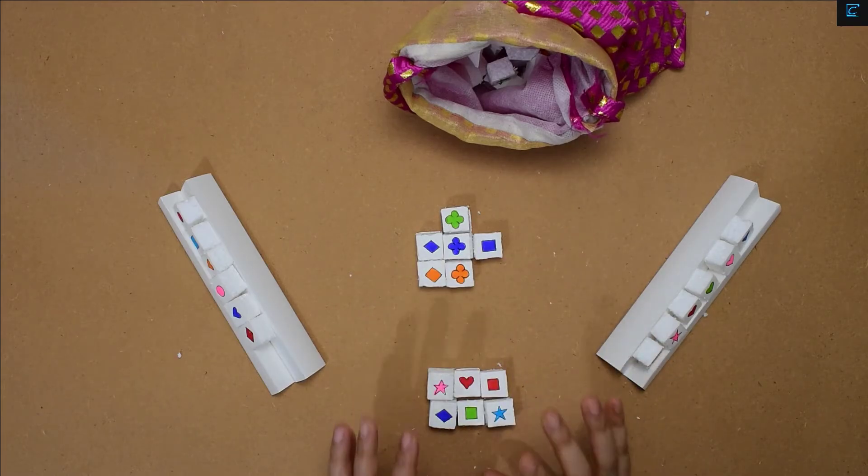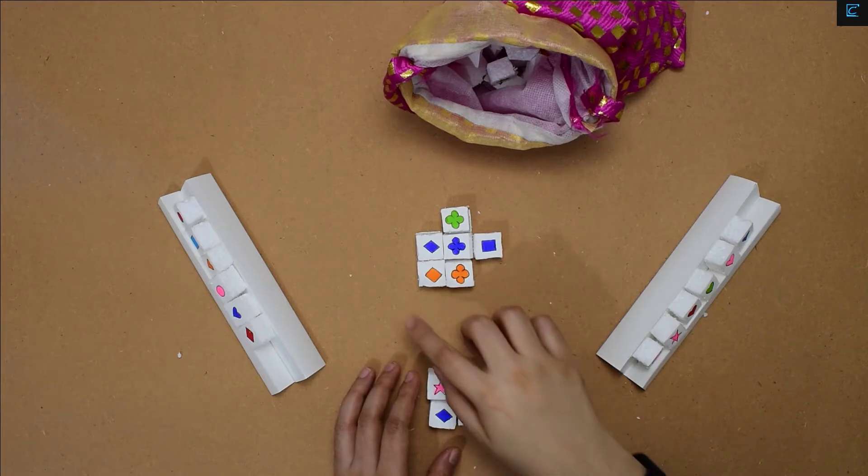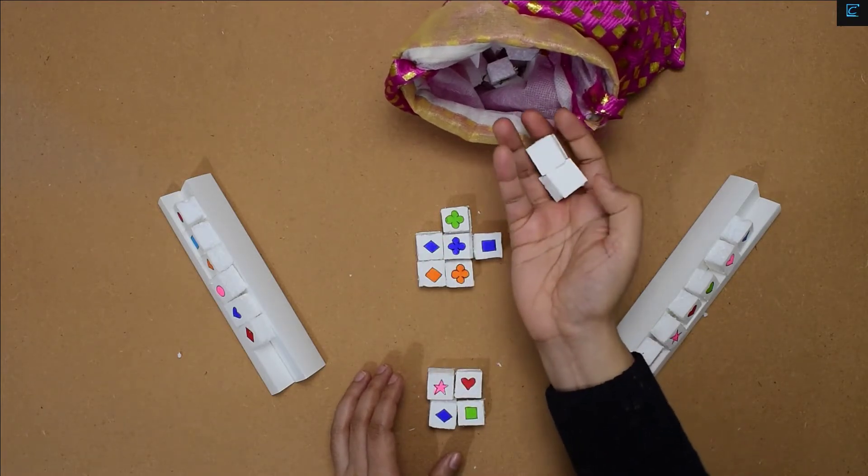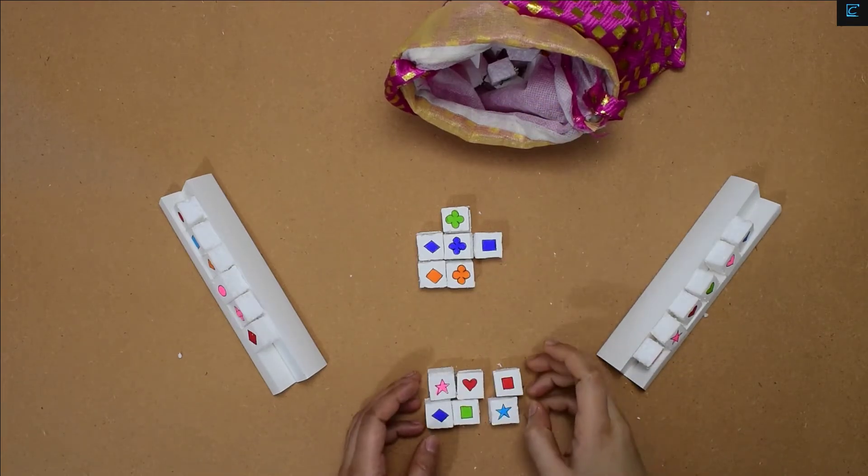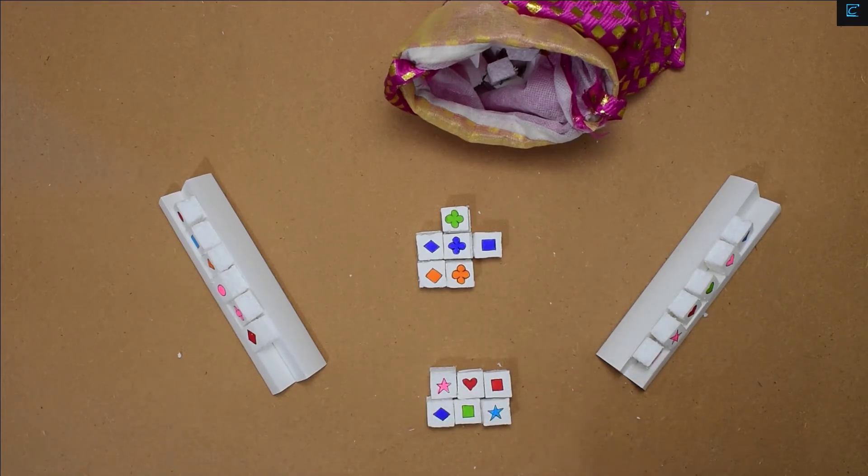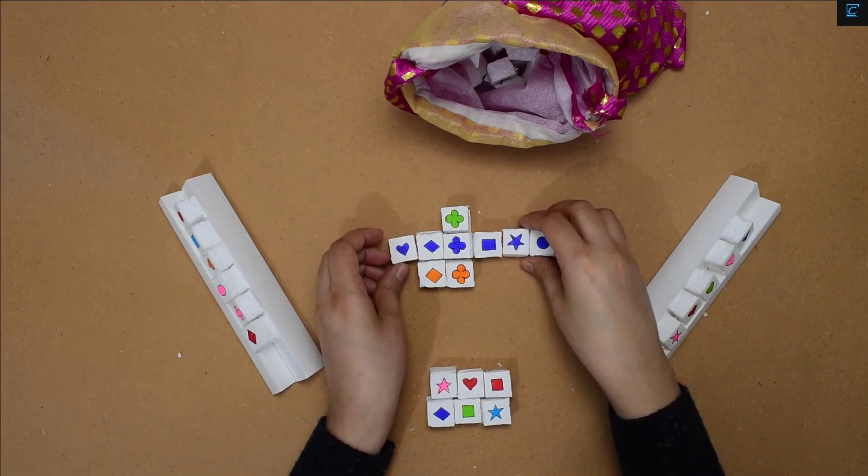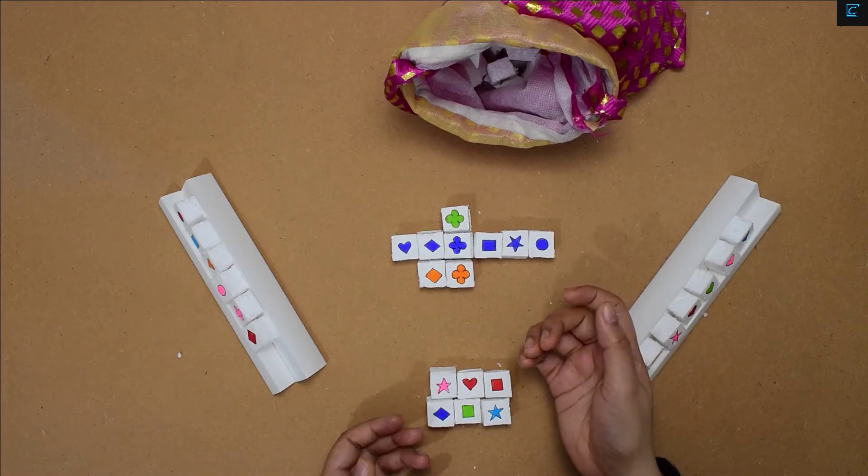As you continue to play, if a player does not have any tiles that fit to be placed, he or she can exchange one or more tiles from the bag. If the player completes a row with all six shapes of same color, or all six colors of same shape, it's a Quirkle. They get double points—that is one for each tile summing up to be six, and double of six is twelve.